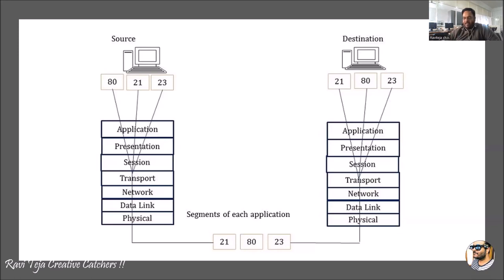The physical layer is the hardware layer and the application layer is where the user interfaces graphically. Using a demultiplexer, all the signals are divided and sent to the respective applications based on port number: port 21 for Outlook, port 80 for Google, and port 23 for chatroom. Up to the transport layer the signal is in one combined form; once it reaches the transport layer at the destination, it gets demultiplexed and the data is received separately.